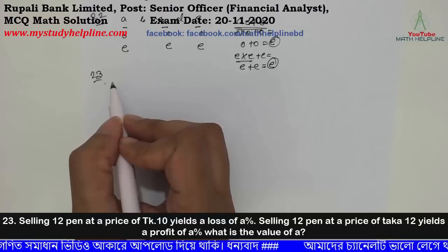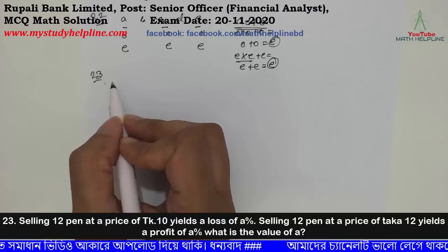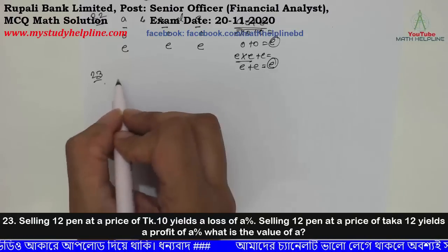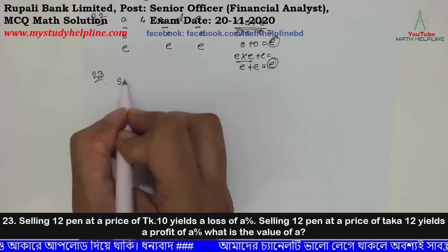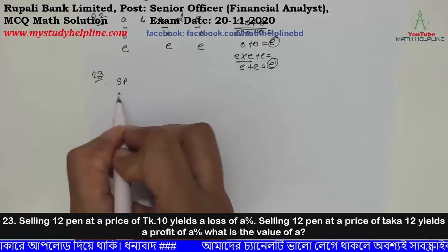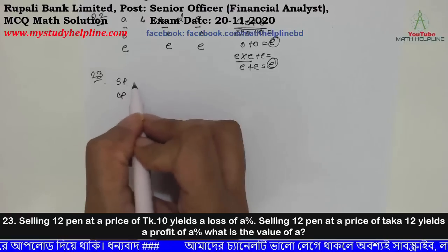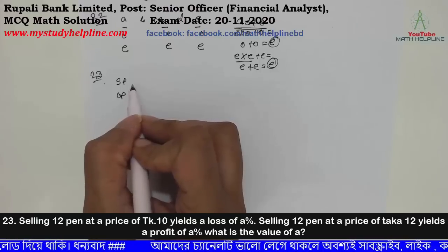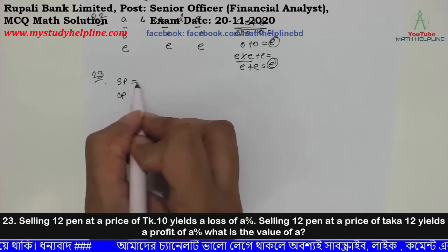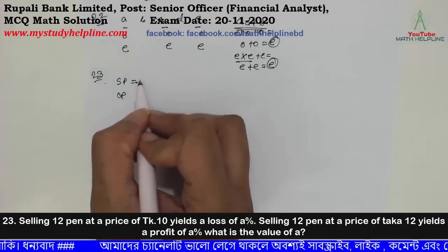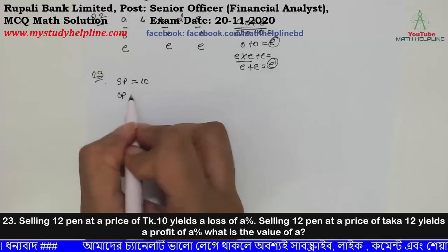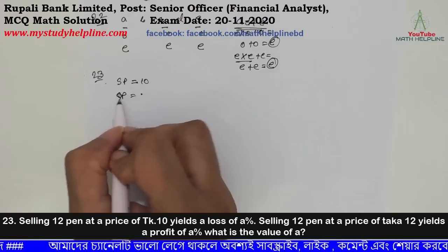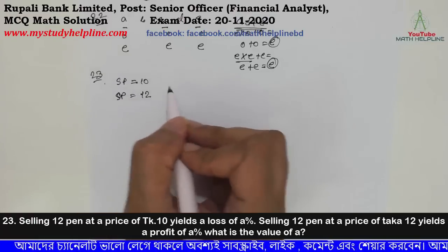Selling 12 pens at a price of 12 yields a profit of A percent. What is the value of A? Here we have selling price and cost price. The quantity is 12. The cost price is 10 and the second selling price is 12. So this is a profit and loss problem. Cost price is 11, selling price is 12.